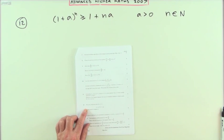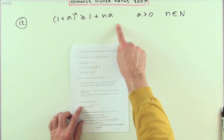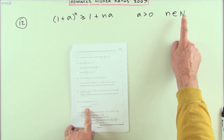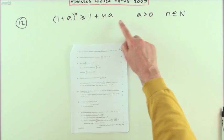Number 12, proof by induction. Prove this proposition here is true. It says for all positive integers—I could have written Z plus—I'll just stick with n because the natural numbers are the positive integers, and this constant a is some number greater than zero.